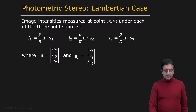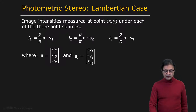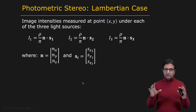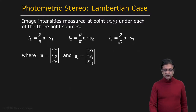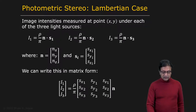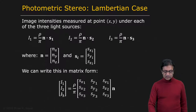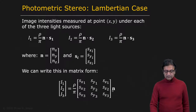Similarly, you get I2 for S2 and I3 for S3, where the source vector subscript corresponds to the source number. We can take all three intensity expressions and write them together in matrix form. You get your image intensity values as a vector I1, I2, I3, multiplied by albedo divided by pi and the unit surface normal.